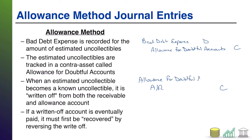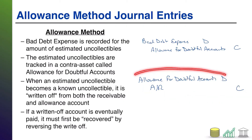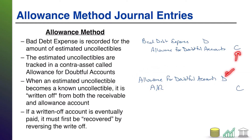But our estimate is no longer needed either, because it came true — it's no longer an estimate, so the estimate is going away as well. Notice it was a credit to establish that estimate; it's a debit to make it go away. This process is called the write-off.